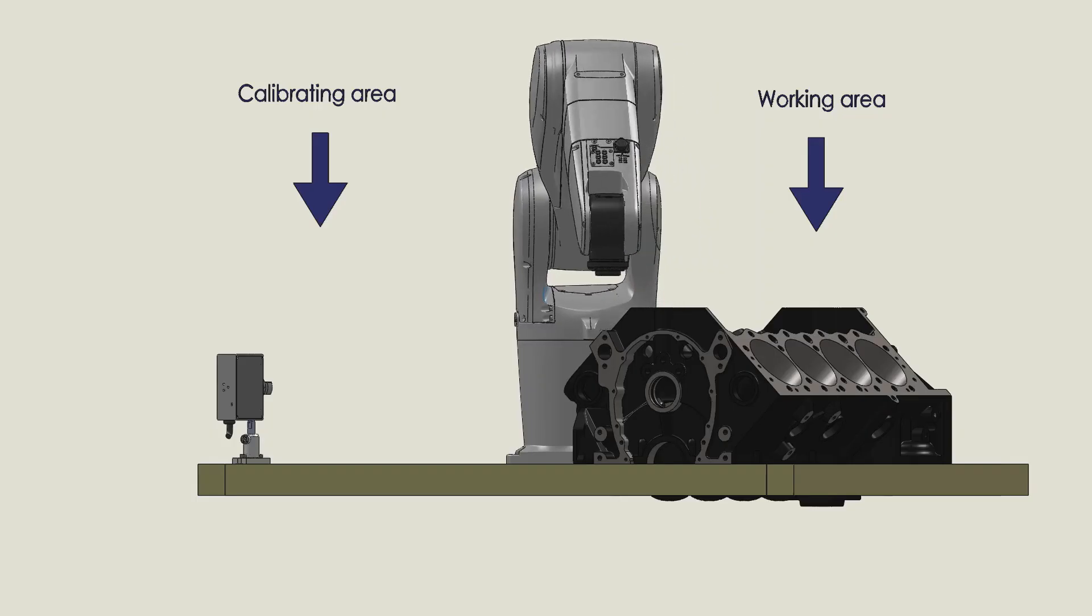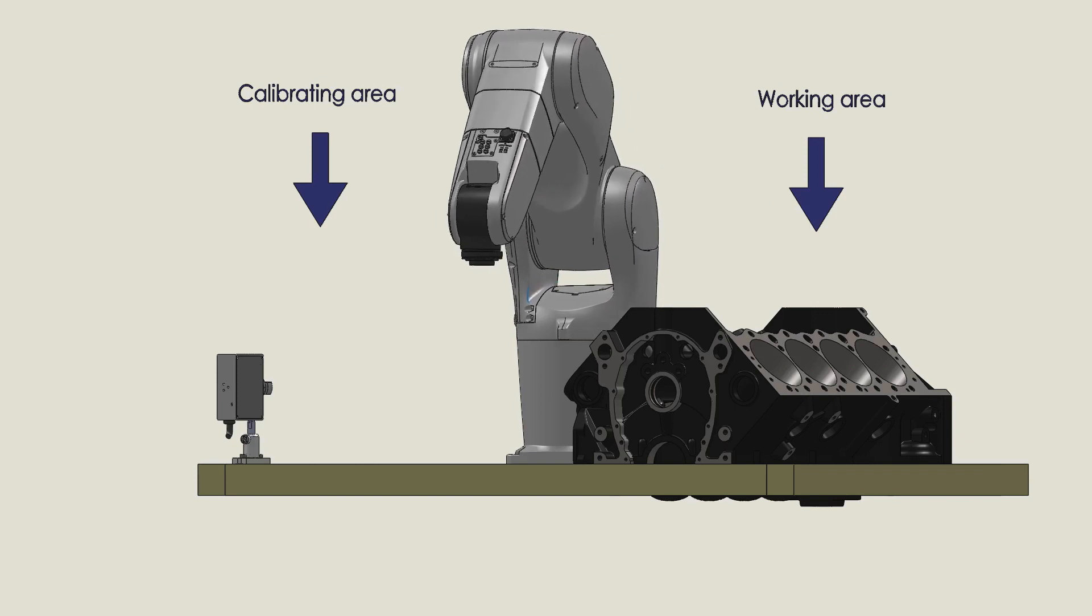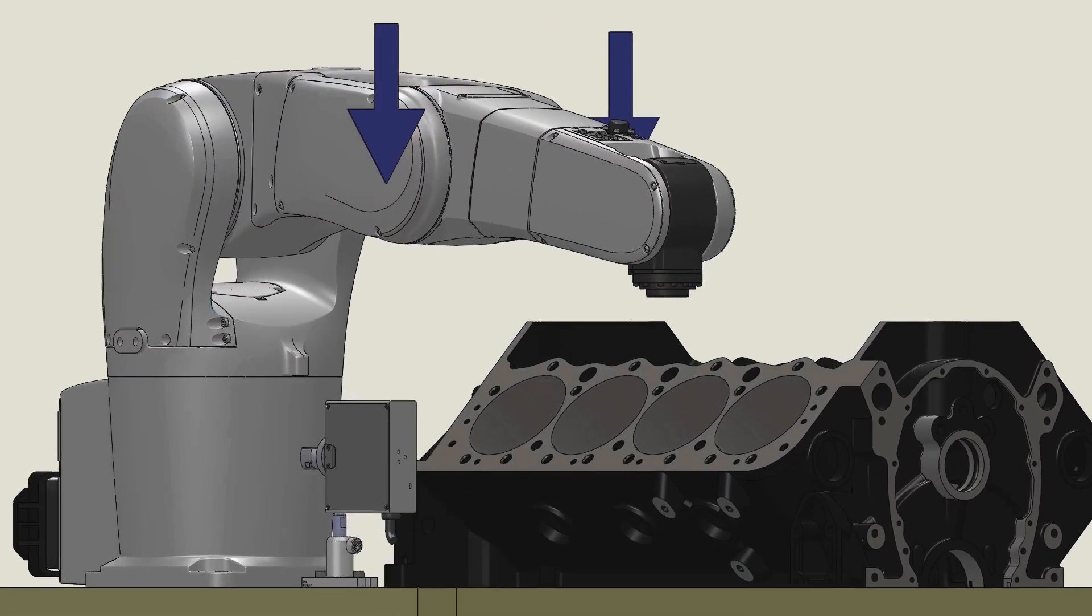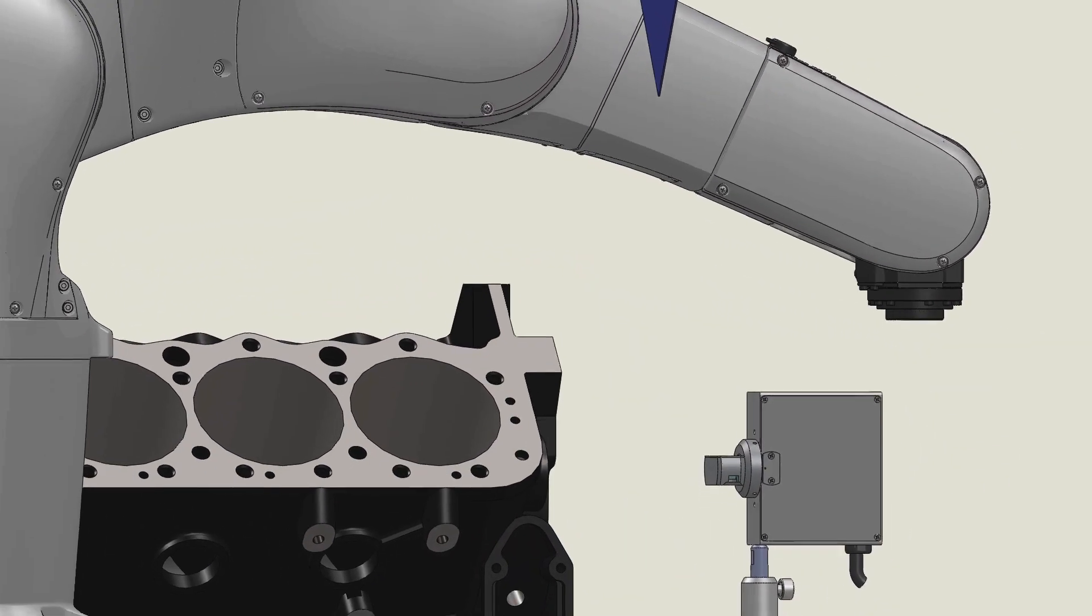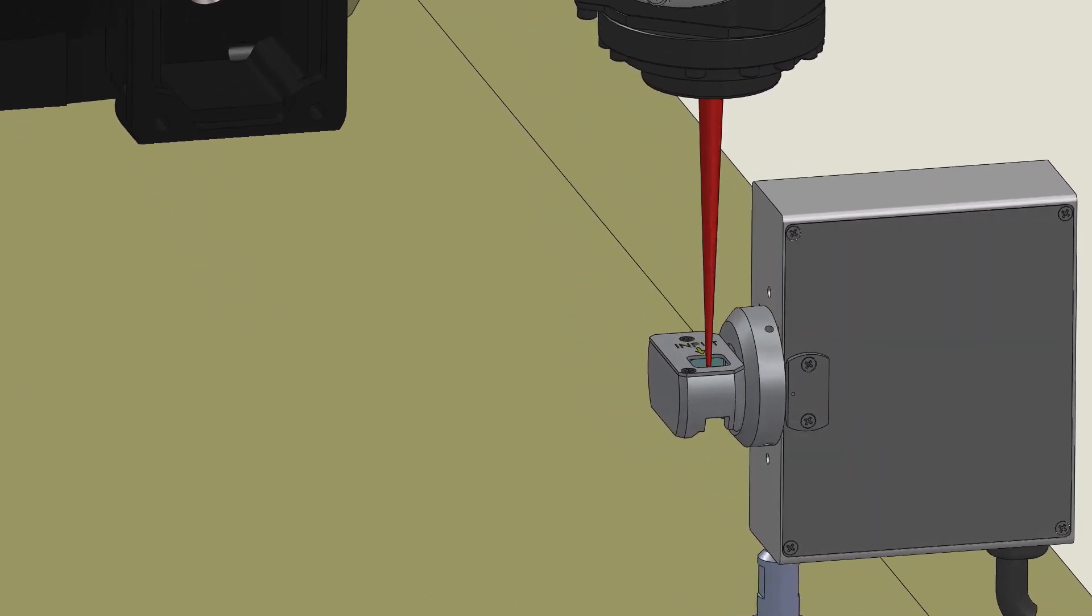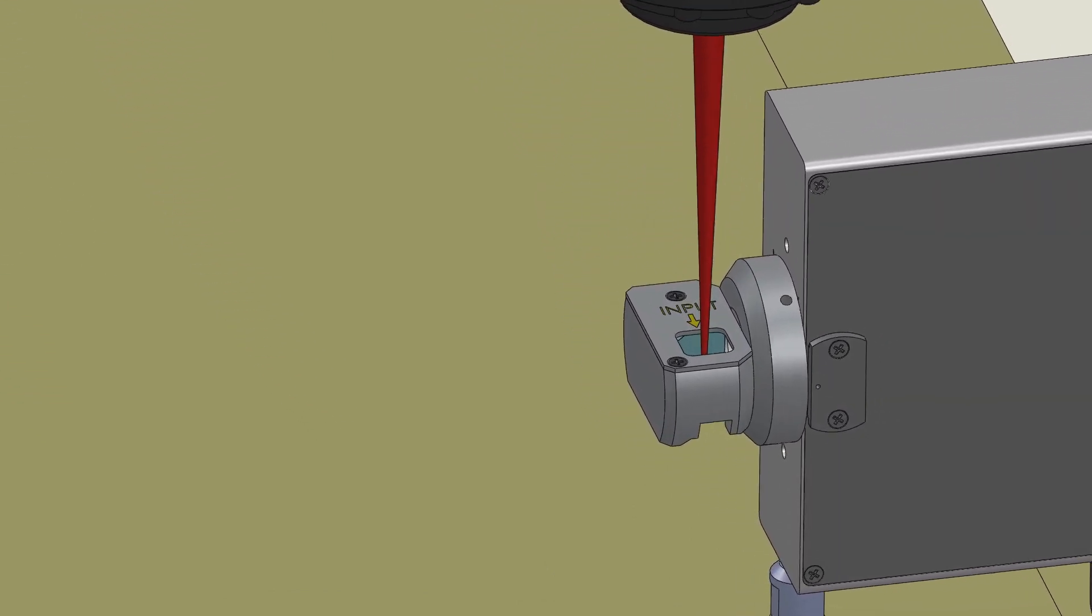The measurement is implemented onto the working area and the results could be used for online calibration. The demonstration you are about to see is of a high power laser welding machine analysis. A laser beam of up to 1.5 kW and a submillimeter beam size is used.